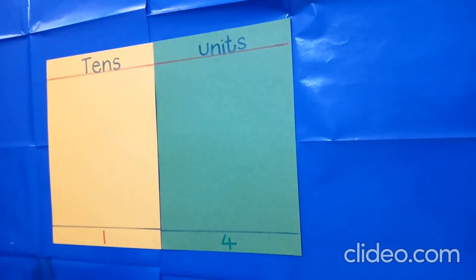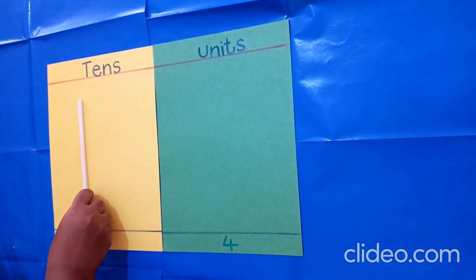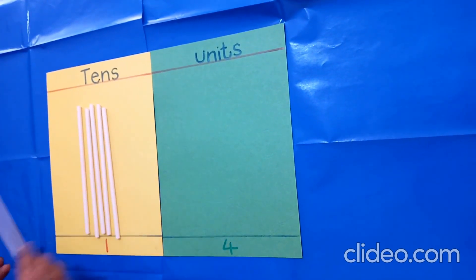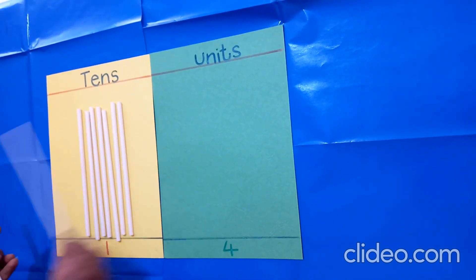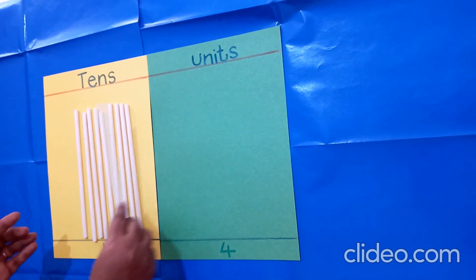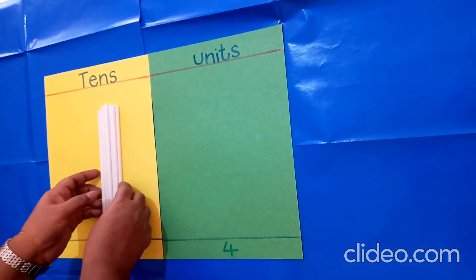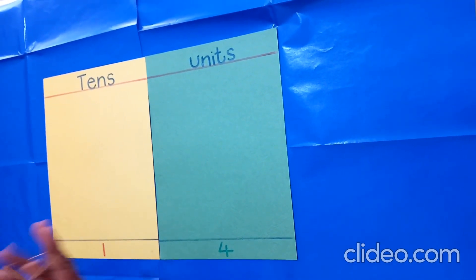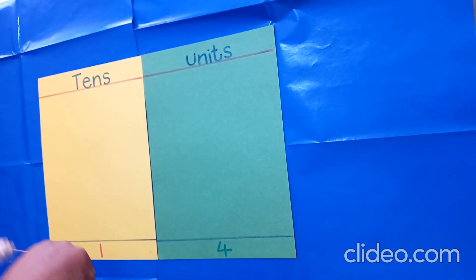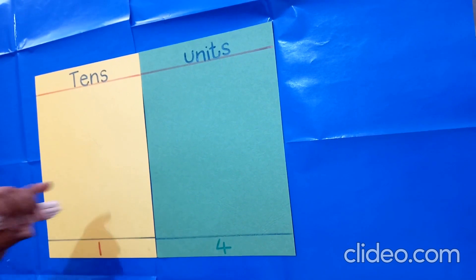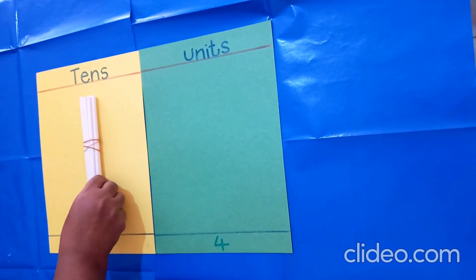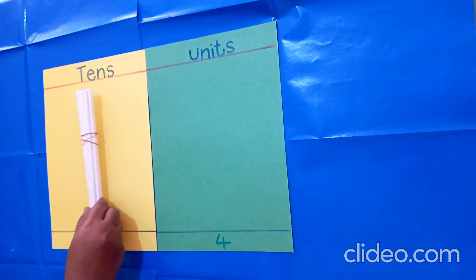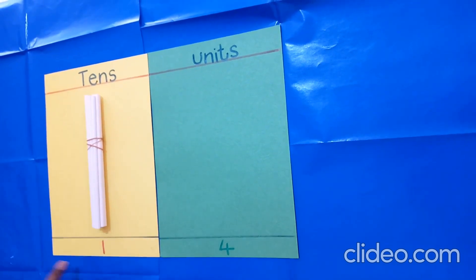Make this number using straws. Let's count. One, two, three, four, five, six, seven, eight, nine, ten. There are ten straws. Now we are making these ten straws into one bundle. Now it is one bundle. One bundle contains ten straws. So it's going to tens column.